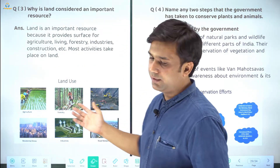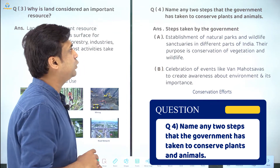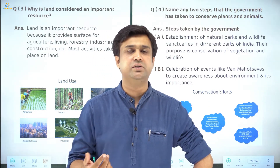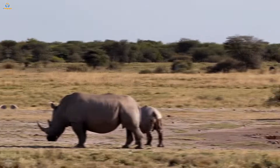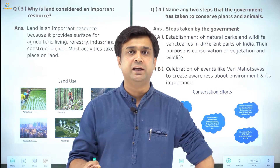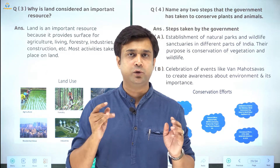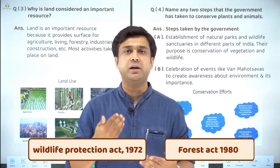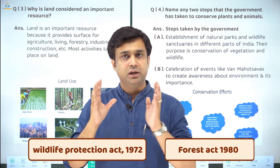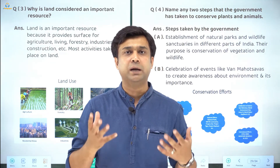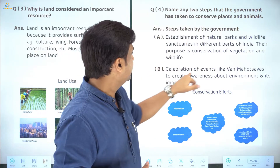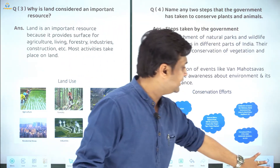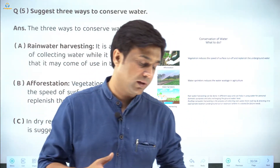Next: name any two steps the government has taken to conserve plants and animals. The government is taking many initiatives — opening national parks, wildlife sanctuaries, celebrating events like Van Mahotsav, and bringing in stringent forest laws. You can write: Wildlife Protection Act 1972 and Forest Act 1980. Through these laws, the government is working to stop deforestation and poaching of animals. Events like Van Mahotsav spread awareness about forests among people.